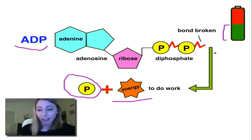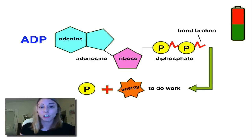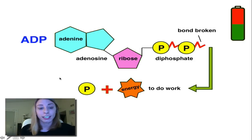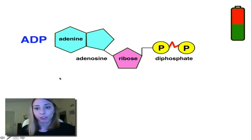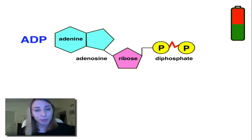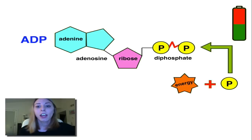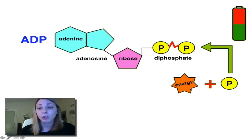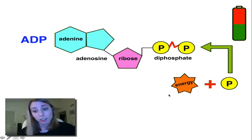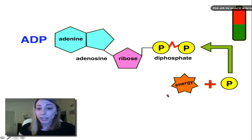So how do we do that? It's actually going to look very similar to what we've seen, but we're going to go in reverse. We have ADP — it's half charged. What we need to do is replace what we lost, so we actually need to add energy.